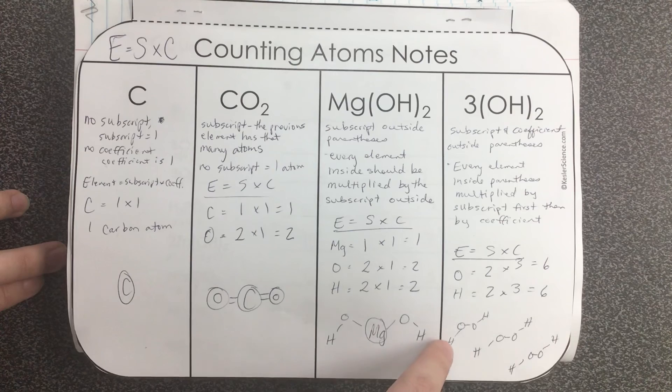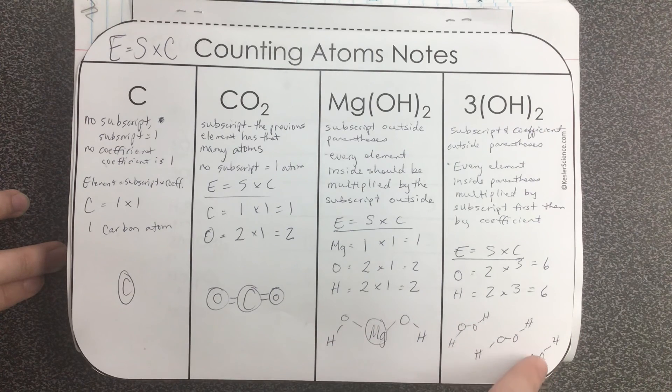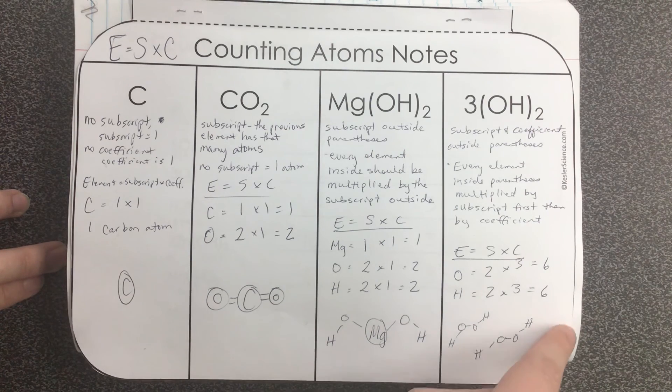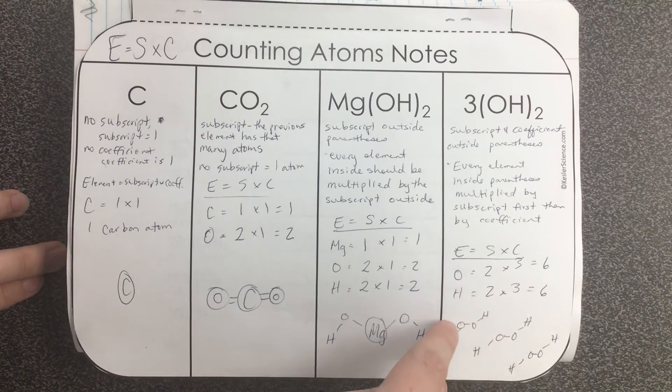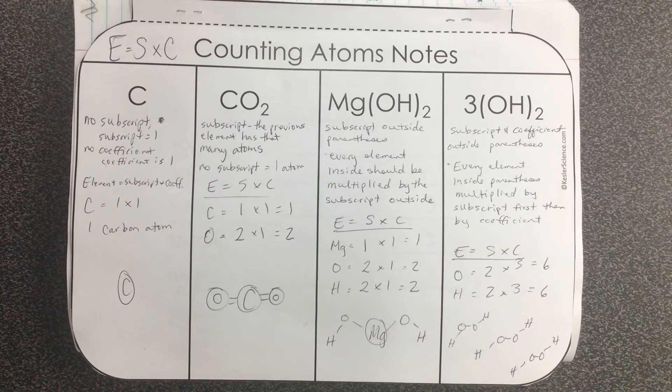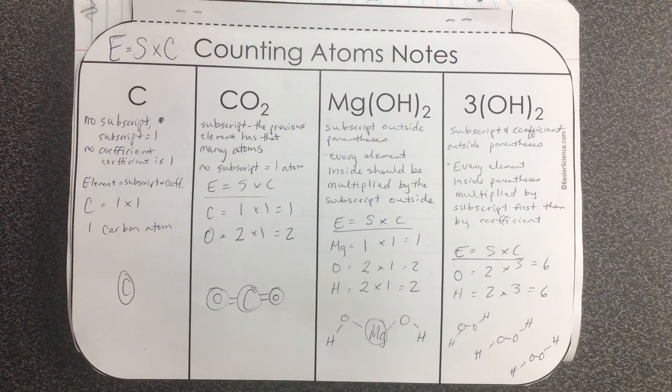And what that's going to look like sort of in real life would be this: three molecules that look like this. And that's how you count atoms using the ESC method.